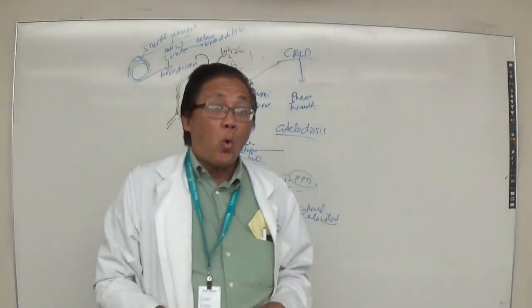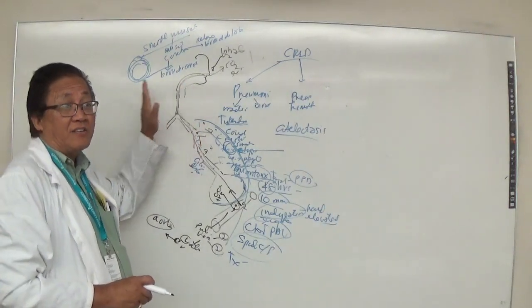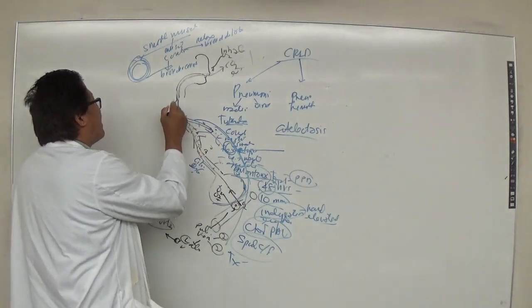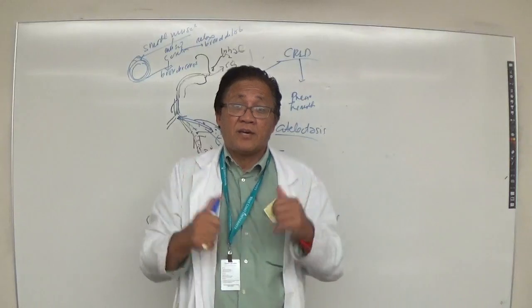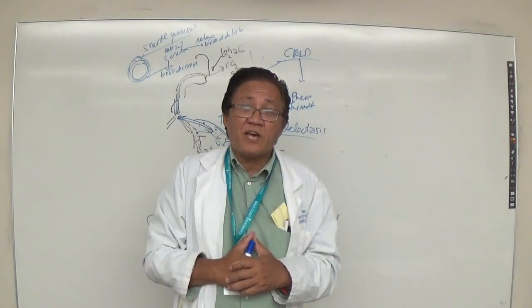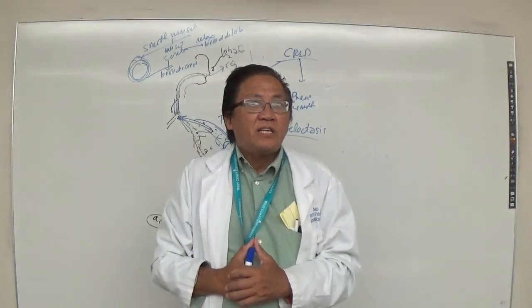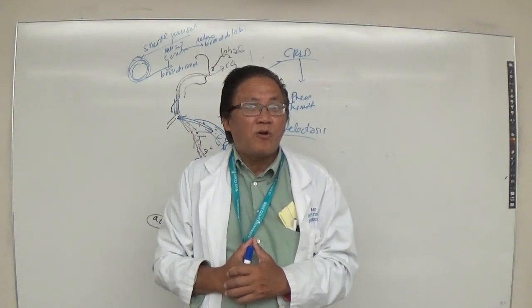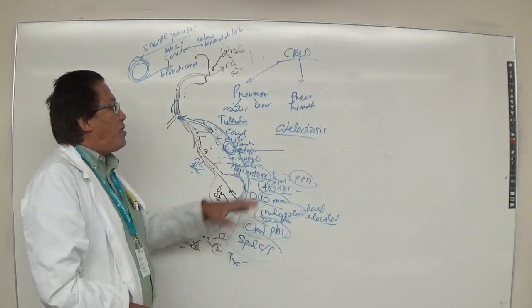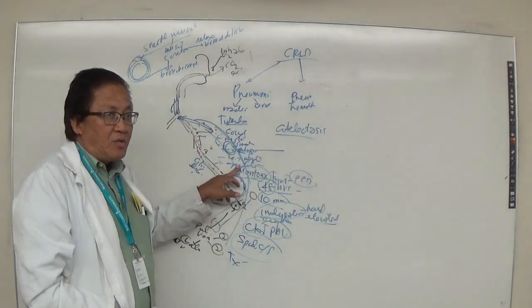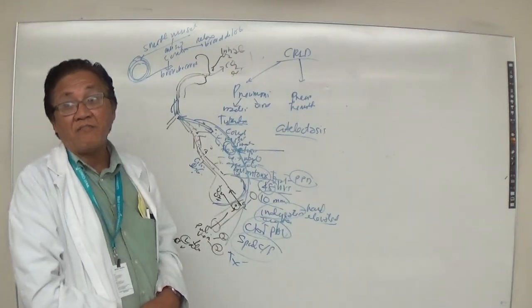You can die from a pneumothorax. On X-ray, the trachea will shift to the contralateral side because the air pushes it. Contralateral tracheal shift will be seen. Hemothorax means blood in the pleural space instead of air — or you can have both. Expect the air to rise and the blood to settle due to gravity.